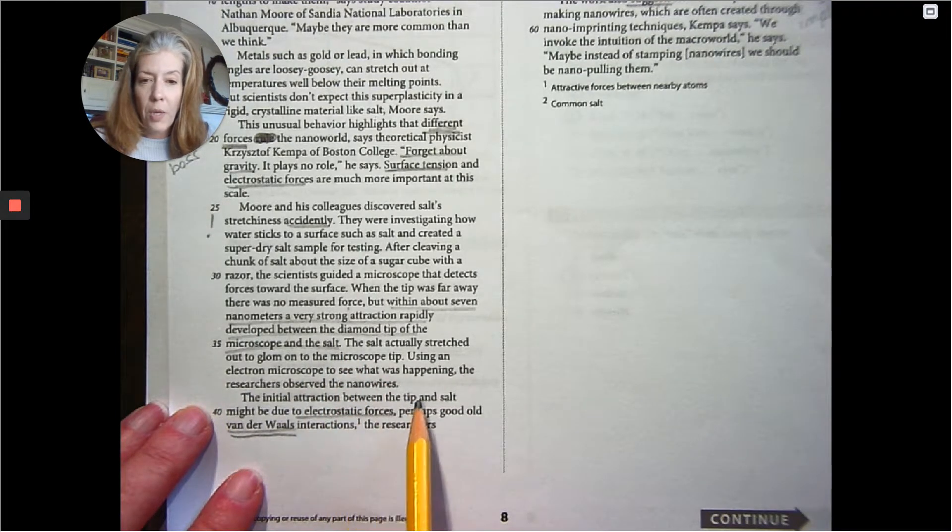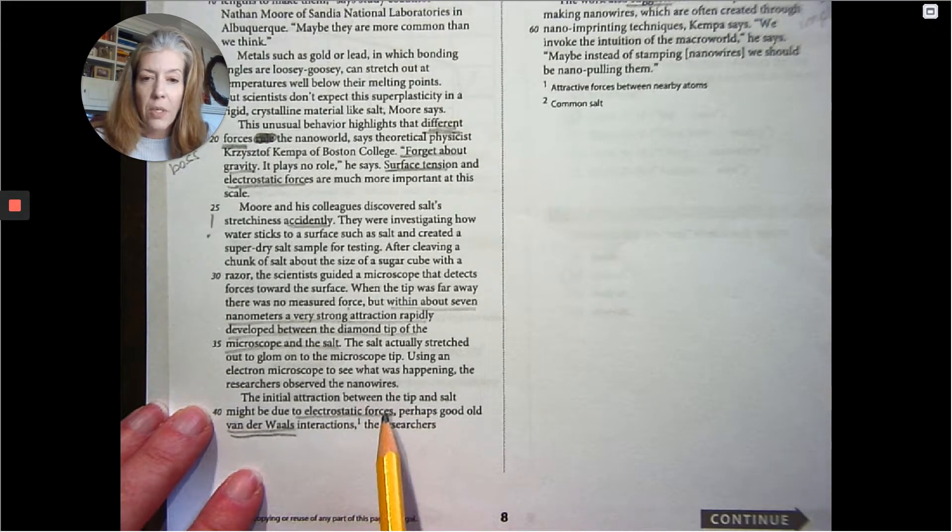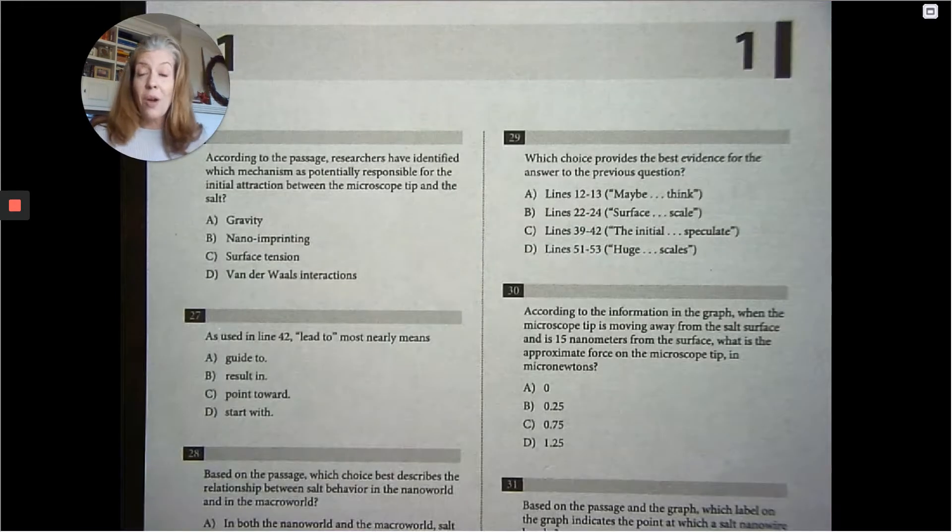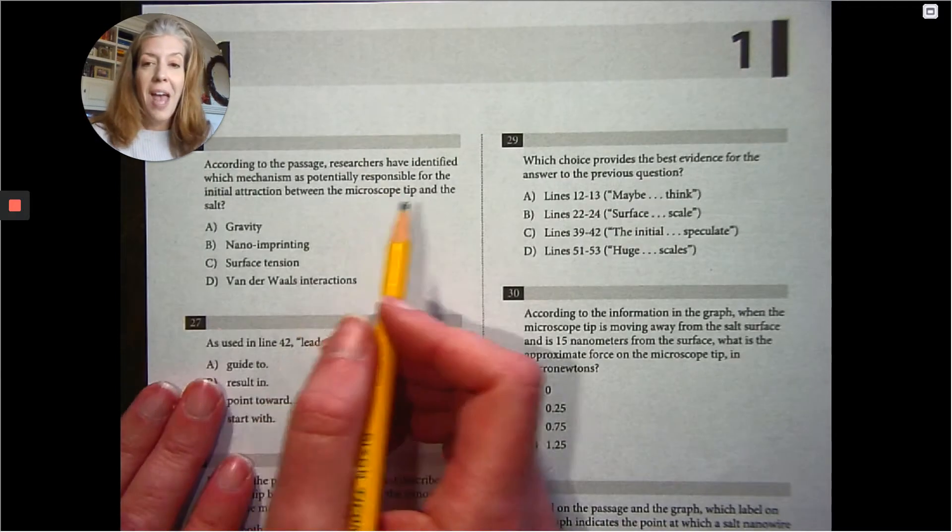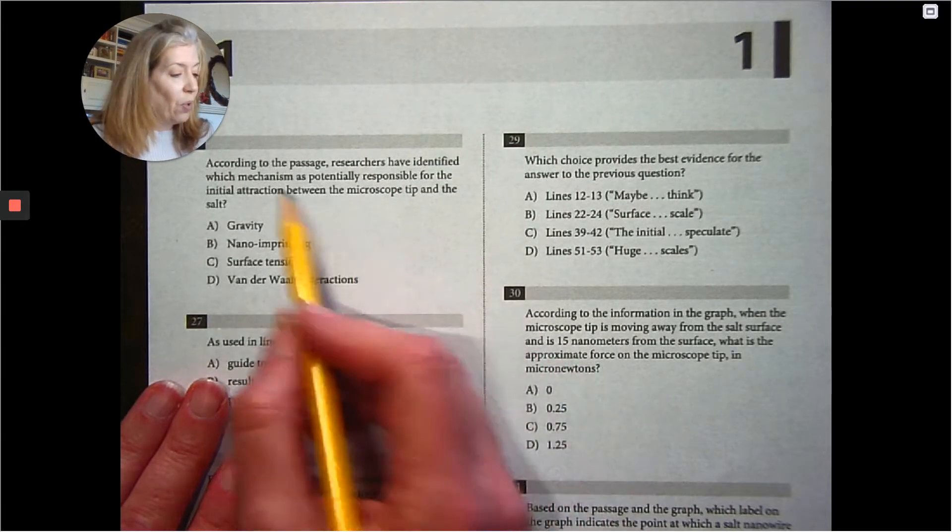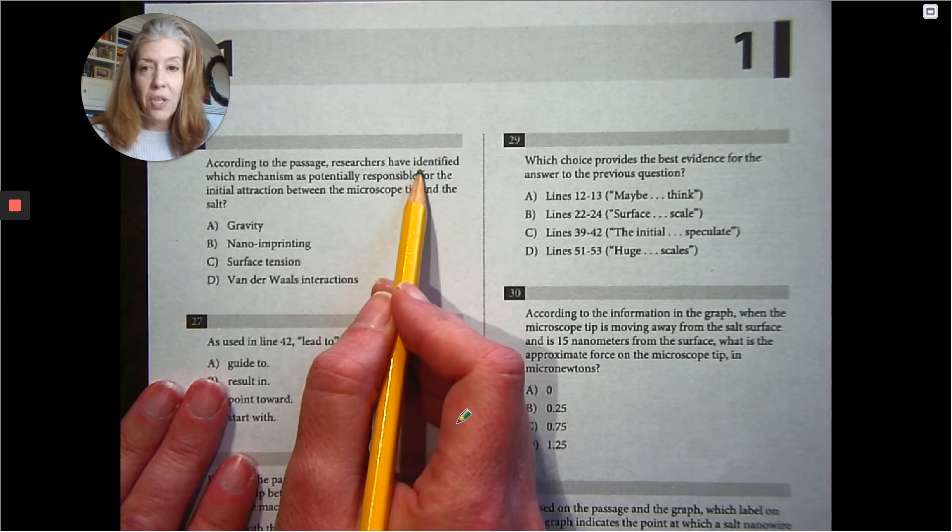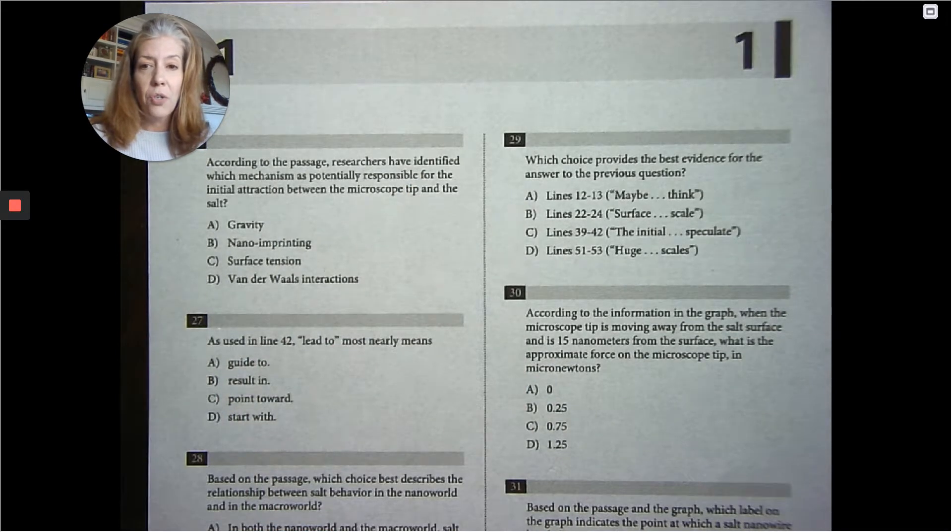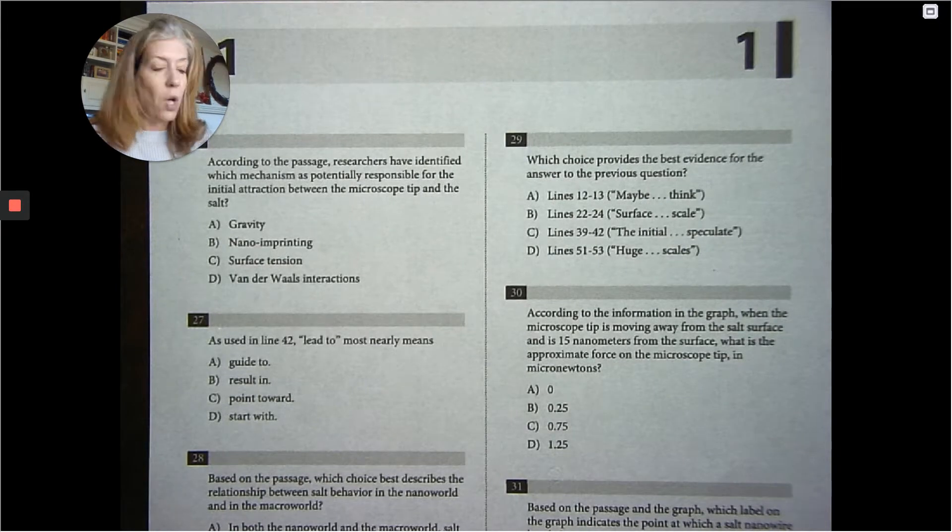So it's, oh, here it is. The tip and the salt might be due to electrostatic forces, perhaps good old VanderWaal's interactions. So showing you that reading, predicting what the questions are going to be, and active reading helps. So according to the passage, researchers have identified which mechanism as potentially responsible for the initial attraction between the microscope tip and the salt.